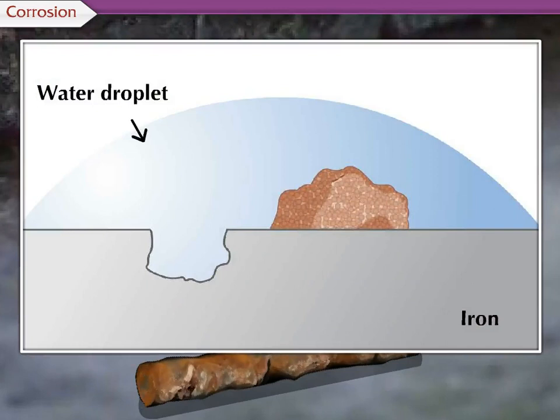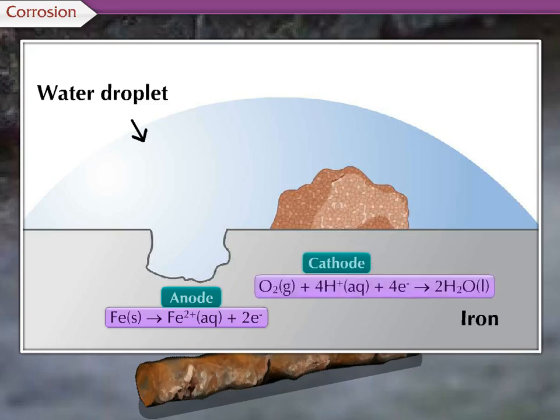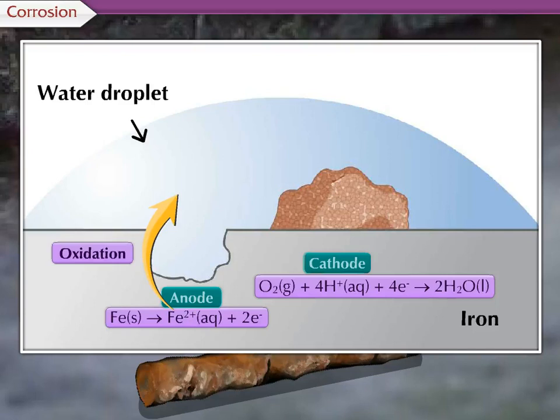Here, different parts of the iron surface form the anode and the cathode. In the anode region of the surface of iron, Fe undergoes oxidation to form Fe2+ ions, and in the cathode, oxygen is reduced to form water and further get oxidized to form Fe3+ ions.